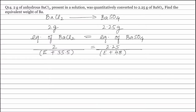Solving this equation, we get the equivalent weight of barium equals 64.5.